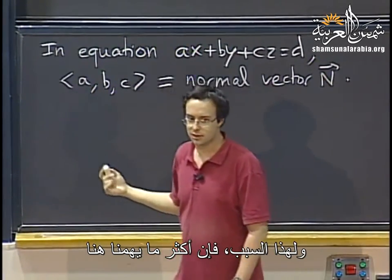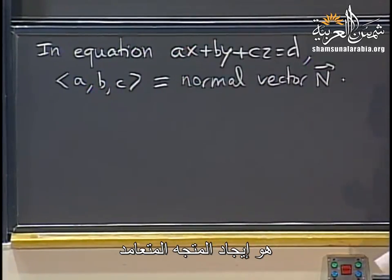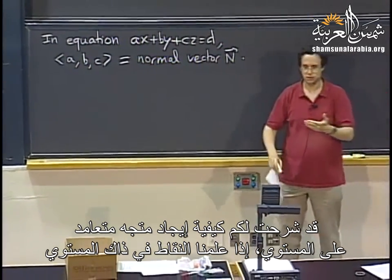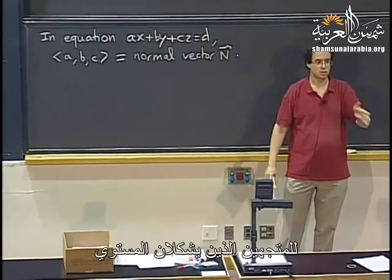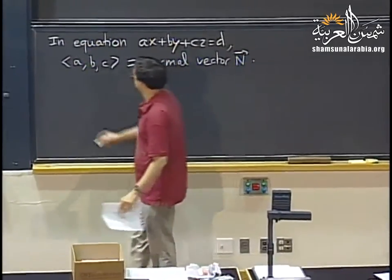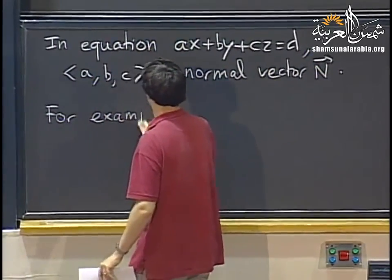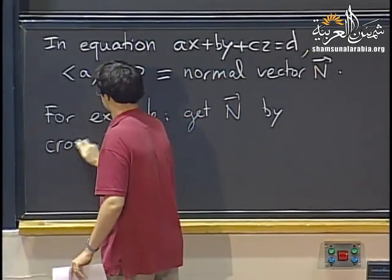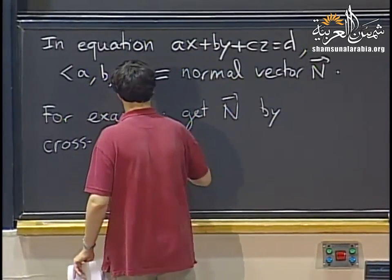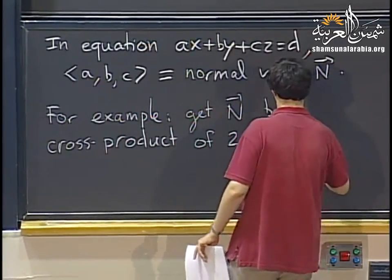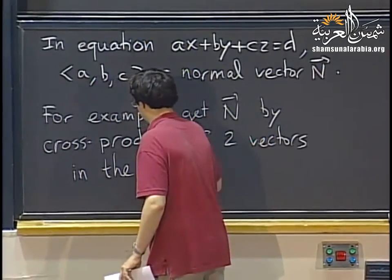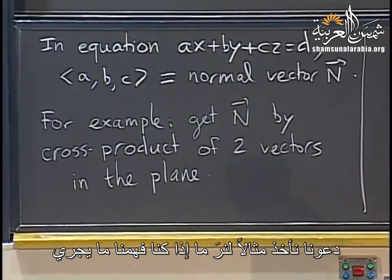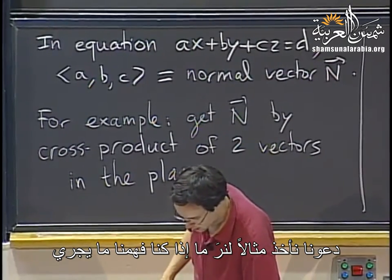What matters most is finding the normal vector. If you remember from last time, we can find the normal vector to a plane if we know points in the plane — namely, we can take the cross product of two vectors contained in the plane, and then we can find a normal vector to the plane.